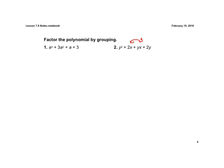If we do that, we're going to have a y squared plus 2y in parentheses. Plus, what do we have left over here? We have a 2x plus yx.